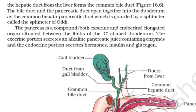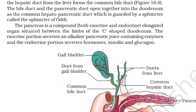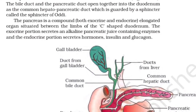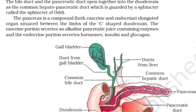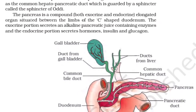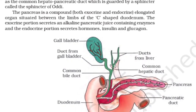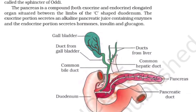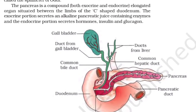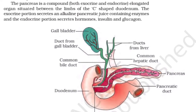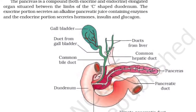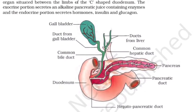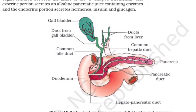The hepato-pancreatic duct is guarded by a sphincter called the sphincter of Oddi. The pancreas is a compound elongated organ situated between the limbs of the C-shaped duodenum. The exocrine portion secretes an alkaline pancreatic juice containing enzymes, and the endocrine portion secretes hormones insulin and glucagon.